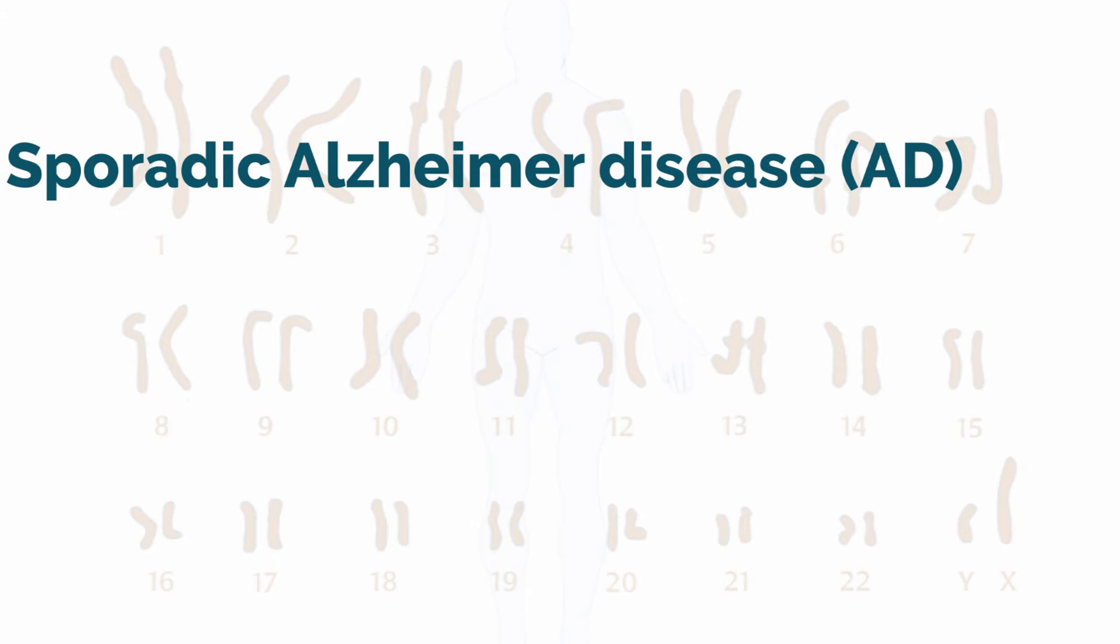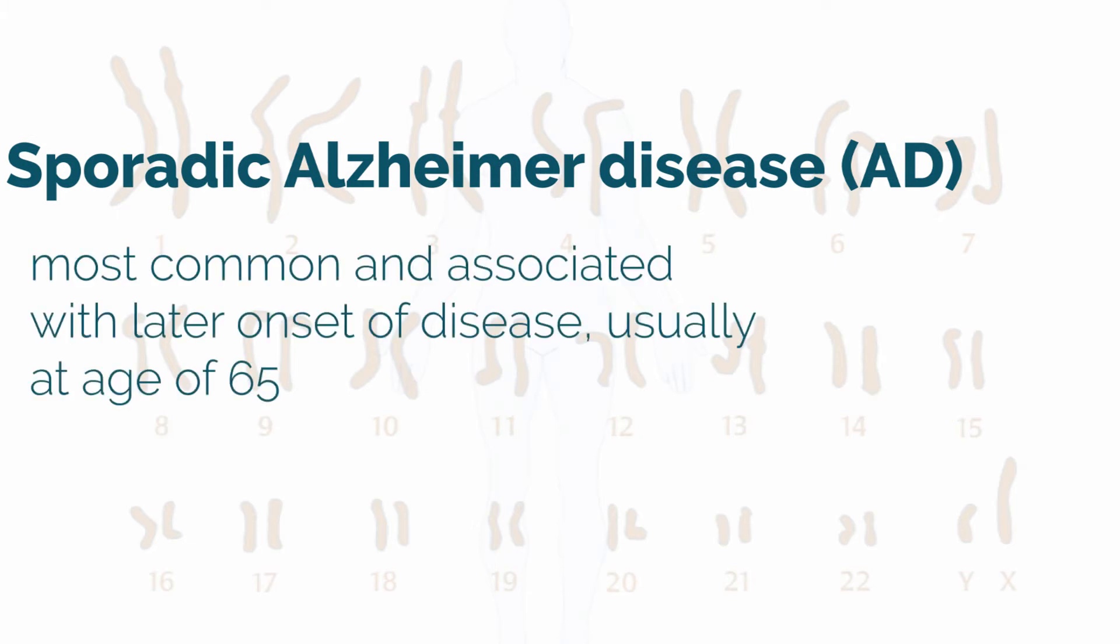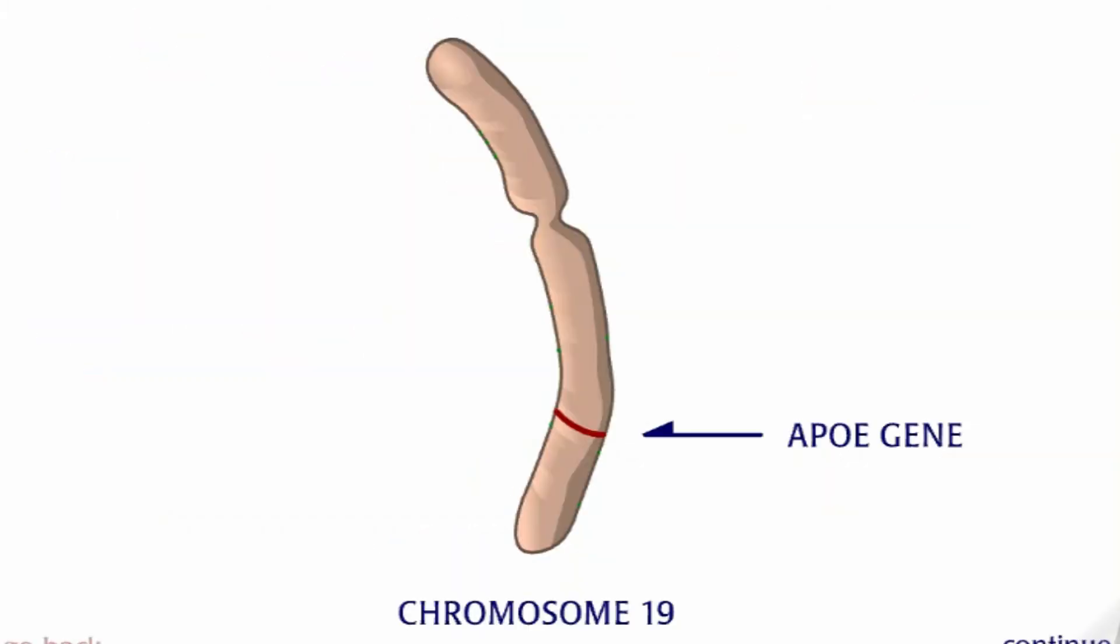Sporadic AD is not linked to an obvious pattern of inheritance, but there is an associated risk of developing this form of AD tied to a version of the APOE gene on chromosome 19.